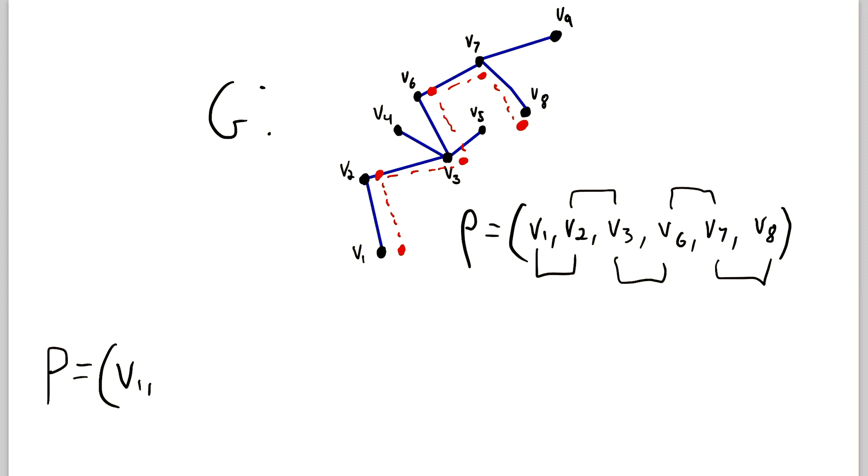So you would start with the vertex we begin at, then you put the edge that you travel, then you put the vertex you're at, then you put the edge you travel. So you can see vertex we start at, which was V1, right here, then we traveled the edge V1, V2. So that's what came next in the sequence.